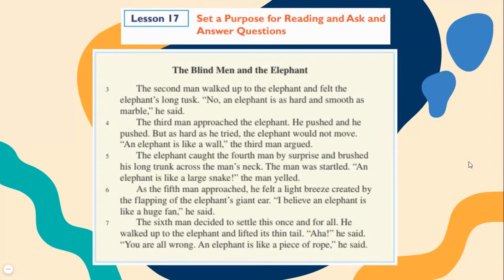The third man approached the elephant. He pushed and he pushed. But as hard as he tried, the elephant would not move. An elephant is like a wall, the third man argued.